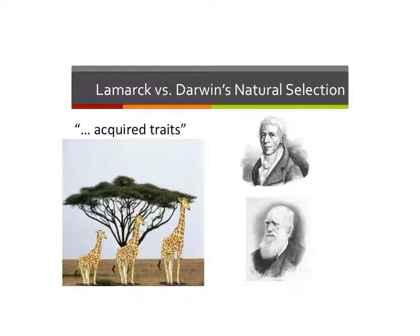But Darwin's theory of natural selection stated that if you're born with an unfavorable trait then you end up dying, and if you're born with a favorable trait then you end up surviving, reproducing, and passing on that trait to the next offspring.